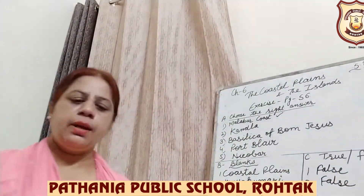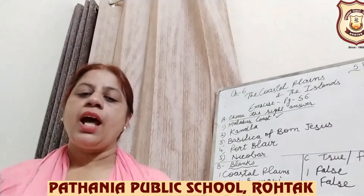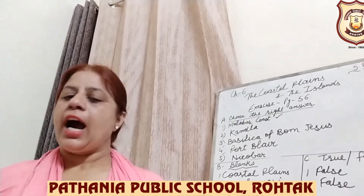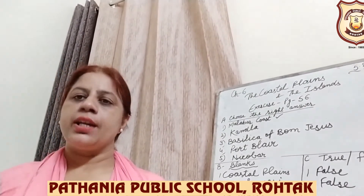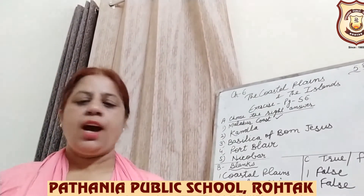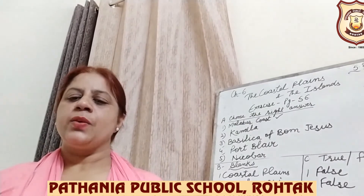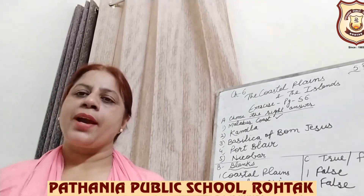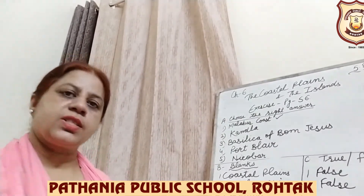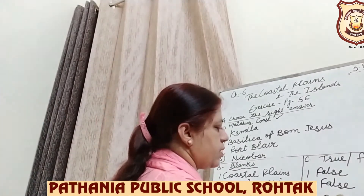Number 3: Andaman and Nicobar Islands are located in the Arabian Sea. No — Andaman and Nicobar Islands are located in the Bay of Bengal. So this is also False. You have to write False.